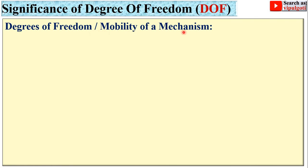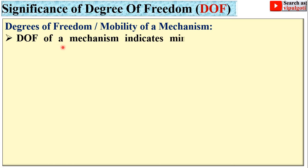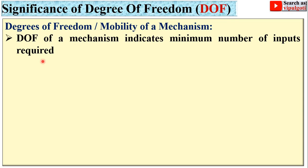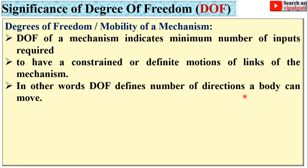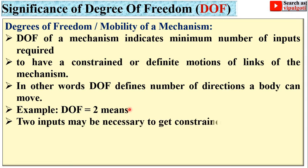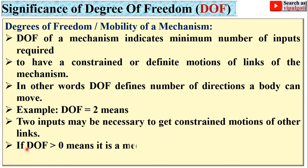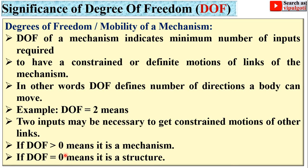Next, the significance of degree of freedom. Degrees of freedom are sometimes called the mobility of a mechanism. The degree of freedom of a mechanism indicates the minimum number of inputs required to have a constrained or definite motion of the links. In other words, DOF defines the number of directions a body can move. For example, DOF equal to 2 means two inputs may be necessary to get constrained motion. If DOF is greater than zero, it is a mechanism. If DOF equals zero, it is a structure — meaning there is no relative motion between the links.